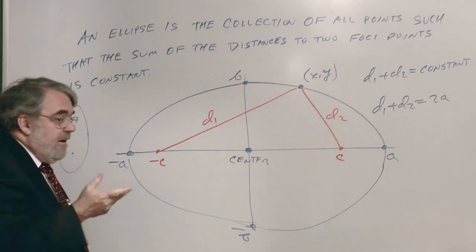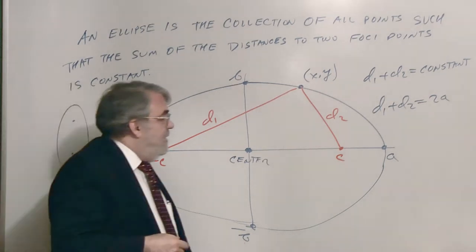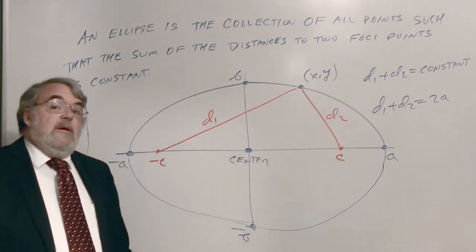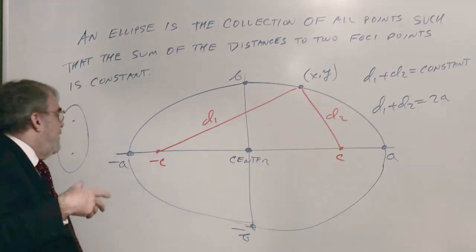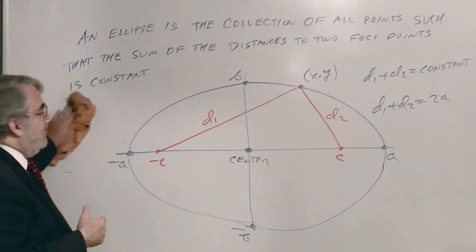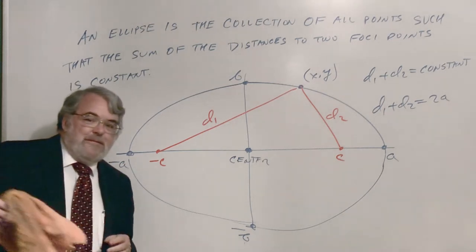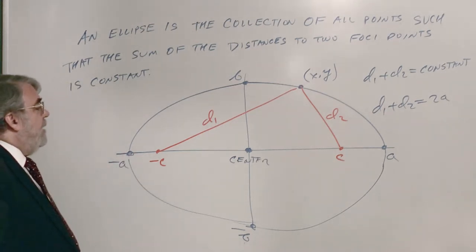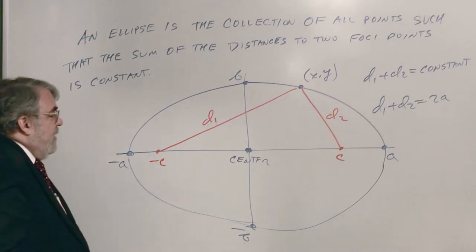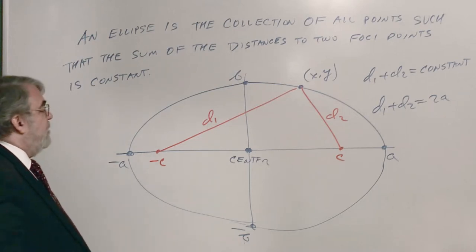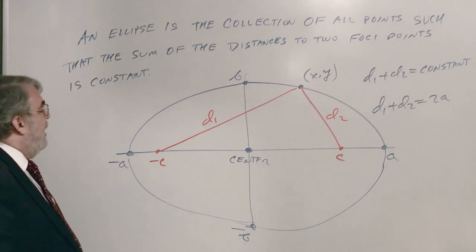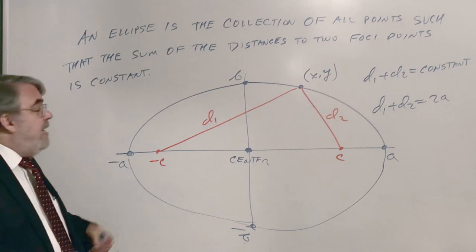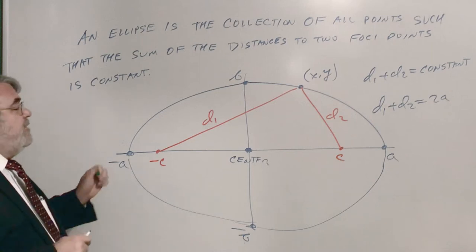I'm going to be consistent: a always goes with x and b always goes with y. Now, what is the relationship between a, b, and c? We can figure that out — it's actually a lot easier than it looks.